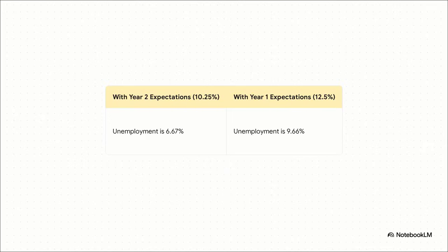This comparison really lays it all out, doesn't it? When expectations are lower and under control, you get a 6.67% unemployment rate. But when they're high and all over the place, you get a much worse 9.66%. It's the same economy, the same inflation rate, but a completely different belief about the future creates two totally different worlds.